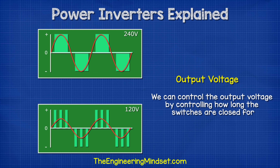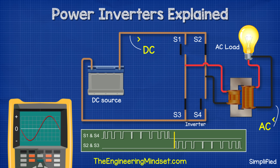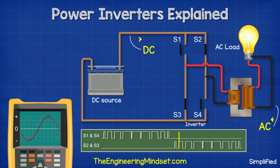We can control the output voltage by controlling how long the switches are closed for — so we could output 240 volts or 120 volts just by trimming the opening and closing times. We can also control the frequency by controlling the timing of the switches, so we could output 60 hertz, 50 hertz, or 30 hertz, whatever is needed for the application. So that's how we can take a 12 volt DC battery and convert it into a 120 volts or 230 volts AC supply by using some IGBTs, pulse-width modulation, and a transformer.